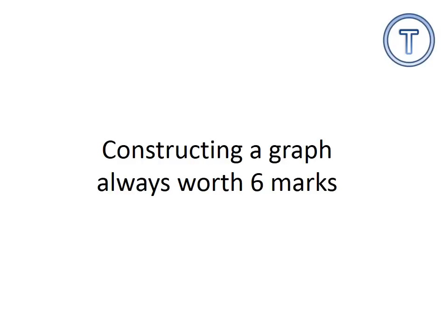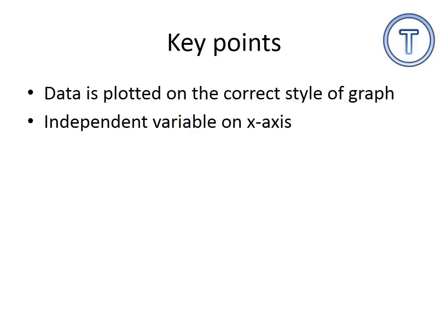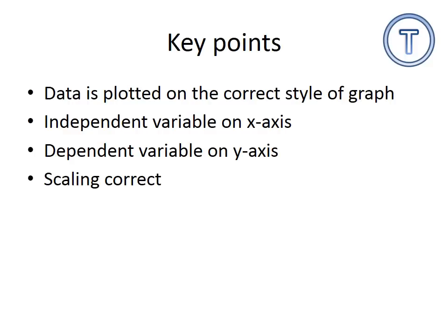Now, constructing a graph is always worth 6 marks. Key points, again, from previous mark schemes. Data is plotted in the correct style of graph. The independent variable is on the x-axis. The dependent variable is on the y-axis. The scaling is correct, which is a common mistake which even able AS students make.